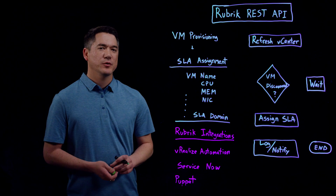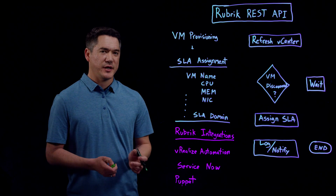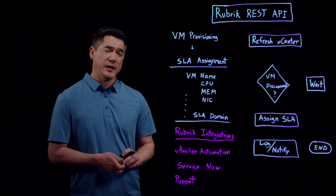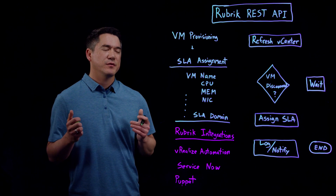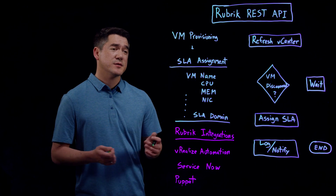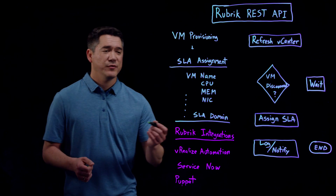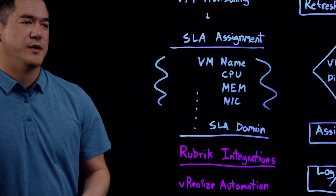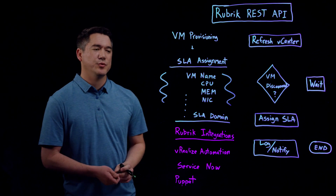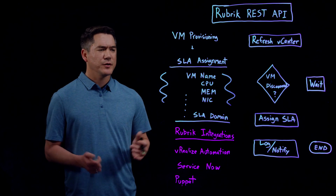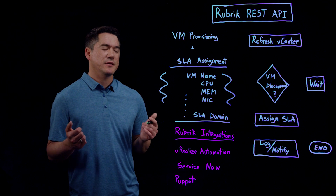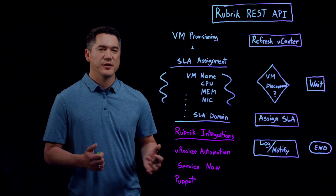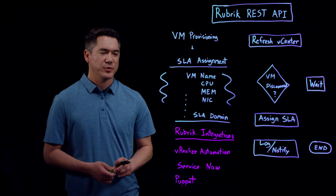This API-first architecture was designed specifically with automation in mind. As an example, I would like to walk through a workflow around VM provisioning and custom SLA assignment. Let's say you're an organization using automation and self-service today. Typically you would have a VM provisioning workflow that exists through a form or a template, asking the end user or help desk items such as VM name, CPU, memory, and NIC. Now Rubrik supports auto protection, but let's say the organization wants to enable the user to choose an optional SLA domain, one that perhaps overrides the auto protection feature.